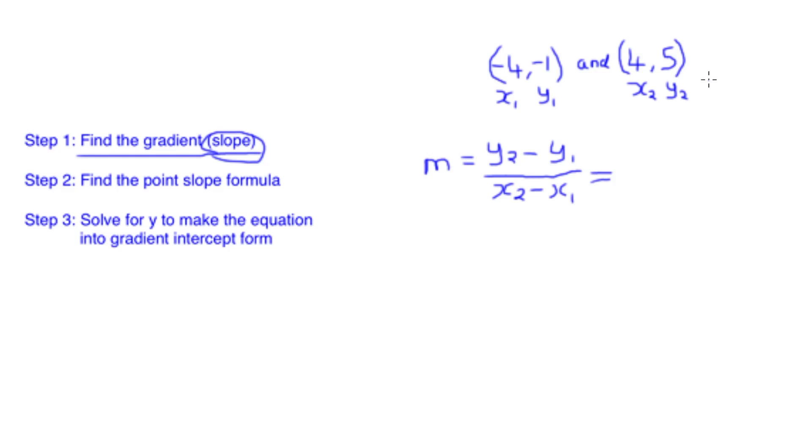For our y2 we just go up here, which is why it's handy writing it down, to find that our y2 value is 5. For our y1 value we go up here again to look at -1. Don't forget your brackets here because we can't have two minuses next to each other. We carry on with the same for the second line, so our x2 value we can see is 4, and then our x1 value is -4, again adding in those brackets to keep it simple.